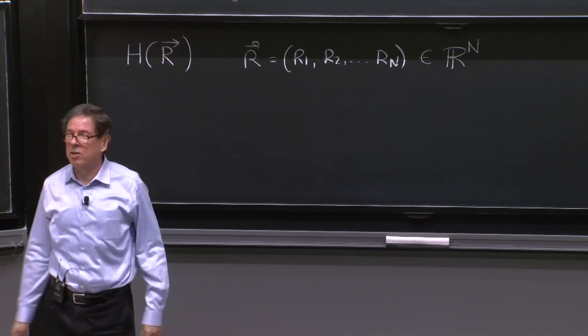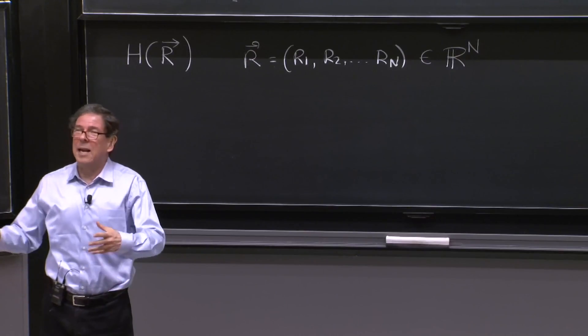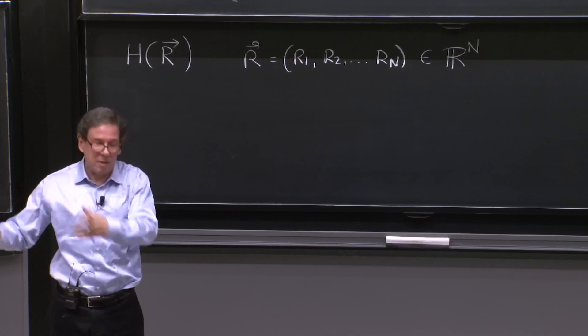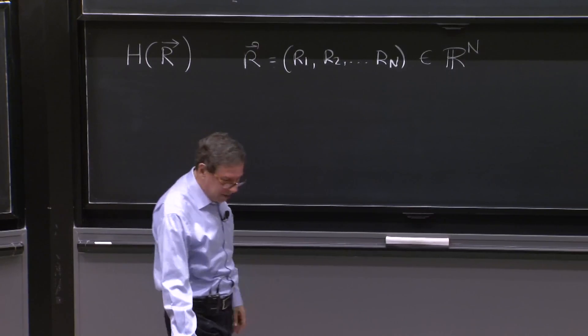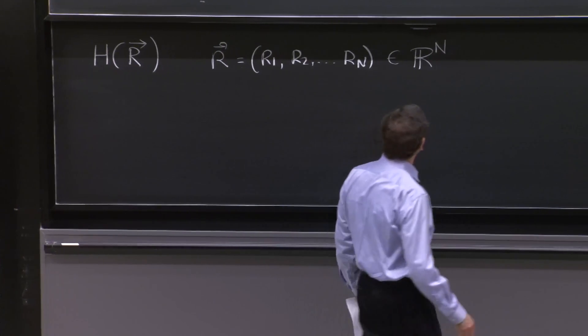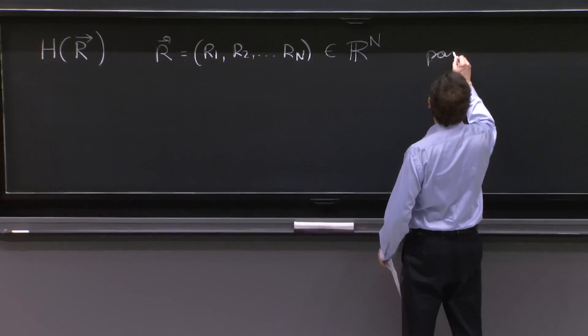You buy another one, comes with another set of parameters. Those parameters can be changed, or you construct them in the lab, your Hamiltonians, with different parameters. Those are the parameters of the Hamiltonian parameters.